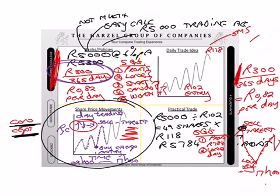How much did you start with? I started with 5,000 rand. So the important question: what can you do with 784 rand per day? A lot — I can go to the movies with my family every single day. So is that worth it? Yes it is.